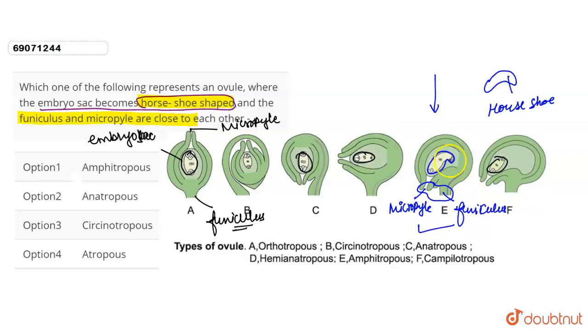The first condition is satisfied. The second condition is the embryo sac shape - the horseshoe shape. Both conditions are satisfied in this particular diagram.